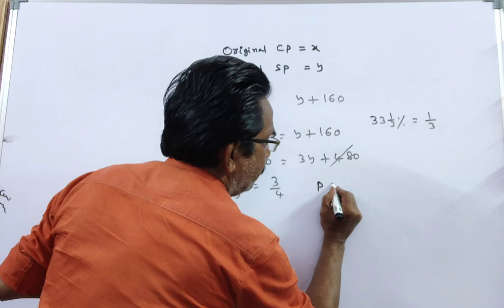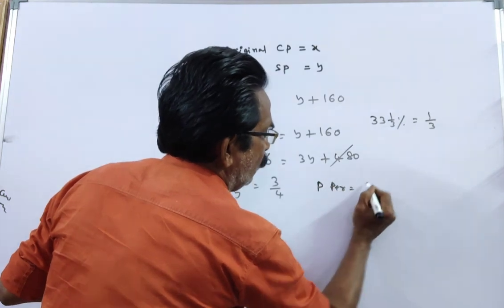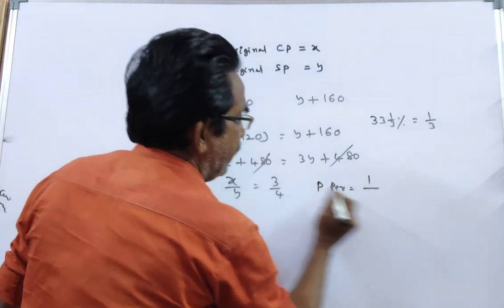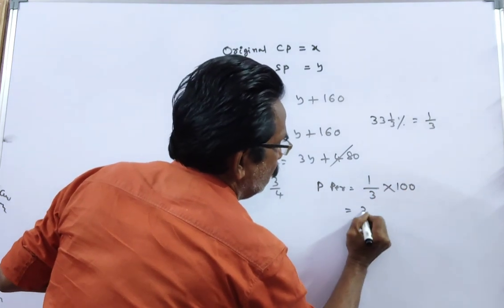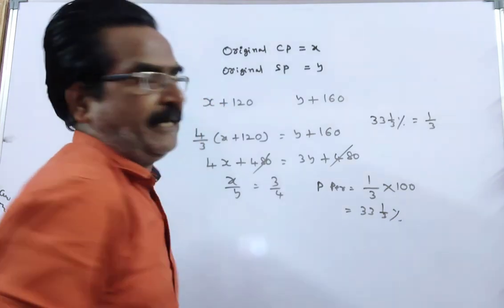We want profit percent. Profit percent is equal to profit 1 by cost price into 100. That is equal to 33 1 by 3 percent.